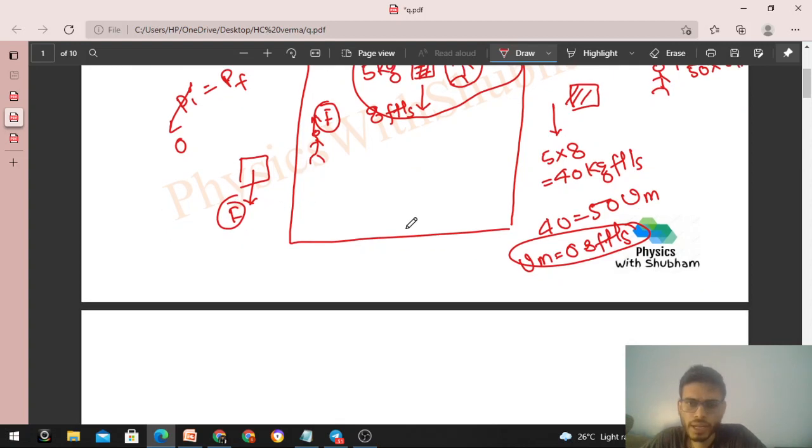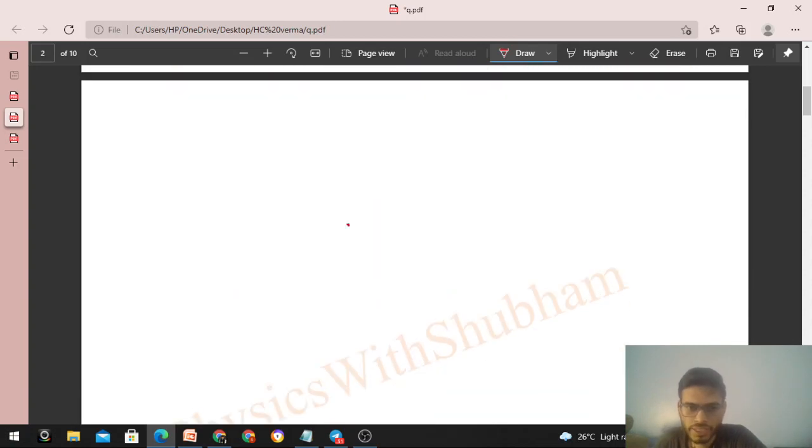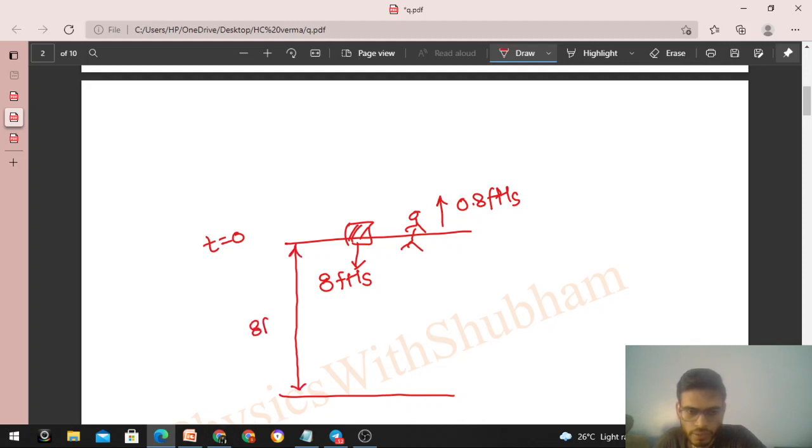So what we have to find, let's talk about that: in how much time will these two meet again. The initial distance of the experimenter is given from the floor, that is 8 feet. So let me draw a fresh diagram. Initially this is the pillow and this is the man. Now at time t equals zero, the man pushes this pillow in the downward direction so that the pillow has a speed of 8 feet per second downward. And the man has a speed of 0.8 feet per second upward. And here is the floor. Initial distance from the floor is 8 feet.